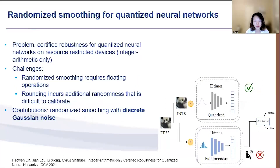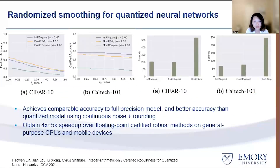In one of our recent works, we looked at quantized neural networks and tried to build certified robustness for them. The motivation is that many resource-restricted devices, such as cell phones, may only support integer arithmetic, while the randomized smoothing approach requires floating-point operations to generate noise. So we proposed a randomized smoothing approach using discrete Gaussian noise. The approach itself is fairly straightforward — it draws discrete Gaussian noise for the randomized smoothing — but the details lie in the analysis of the robustness guarantee. Results show the discretized approach (blue line) achieves comparable accuracy to the full-precision model (yellow line), much better accuracy than the model using continuous noise with rounding (green line), and is also much faster compared to the floating-point methods.